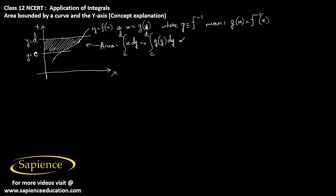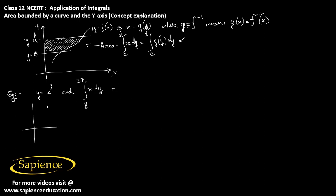We can explain this using one example. Suppose we have y equals x cubed, and we need to find the integral of x dy from 8 to 27. We know the graph of y equals x cubed looks like this. This is the y equals x cubed graph.